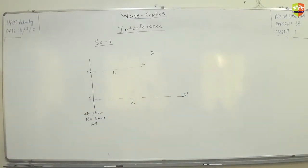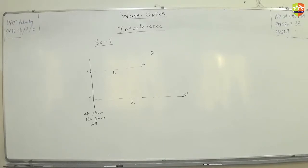These are two coherent sources with the same frequency. Even the wavelength is the same, because the medium is the same, the speed of light is the same, so frequency is the same and wavelength also becomes the same.